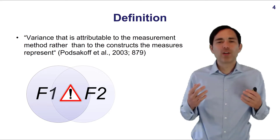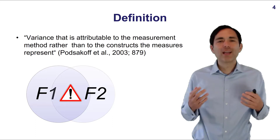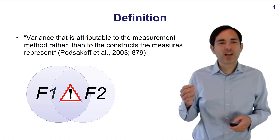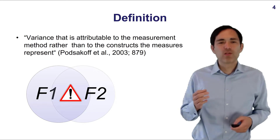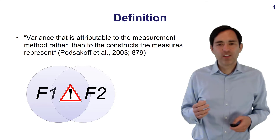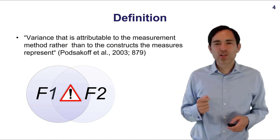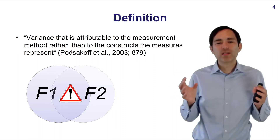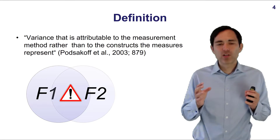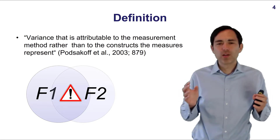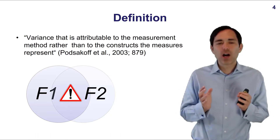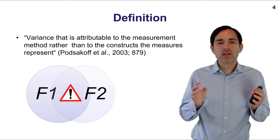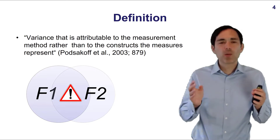Talking about the definition of Common Method Variance, I would like to use the quotation by Podsakoff et al., based on an article that has been cited a lot in social science. The quotation is: variance that is attributable to the measurement method rather than to the constructs the measures represent. For illustration, have a look at two overlapping circles. Each circle represents the variance of a variable, and the overlapping area is the shared variance. This shared variance consists of the true relationship between the two variables, but also some shared variance not connected to the actual linkage — that relates to a measurement error, the Common Method Bias.